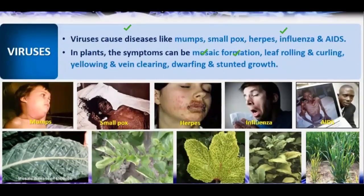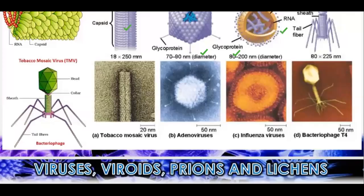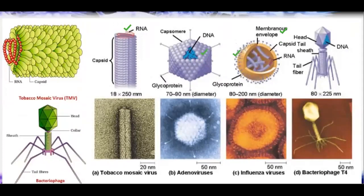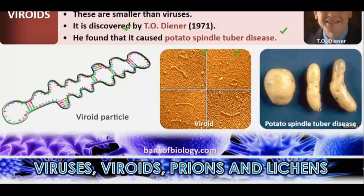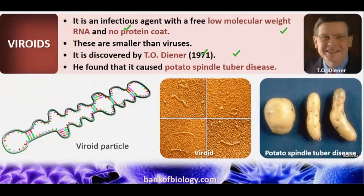Viruses cause many infectious diseases in plants and animals. Viroids are smaller than viruses, contain only genetic material (RNA) with no protein coat, and cause diseases such as potato spindle tuber disease, discovered by Diener.